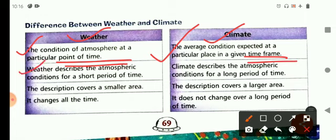Weather describes the atmospheric conditions for a short period of time. Climate describes the atmospheric conditions for a long period of time.